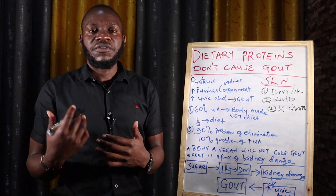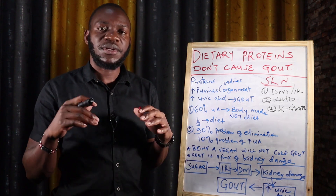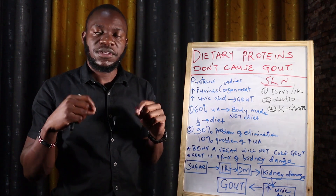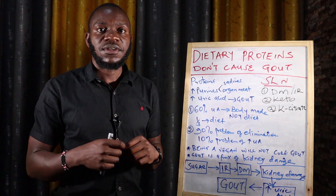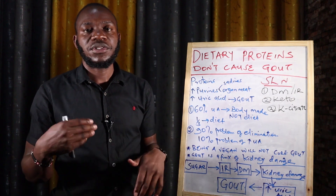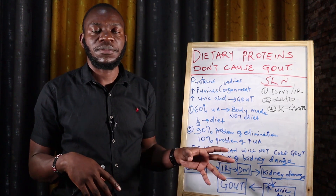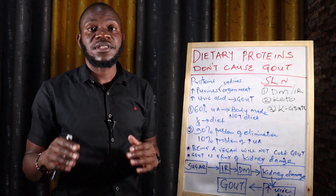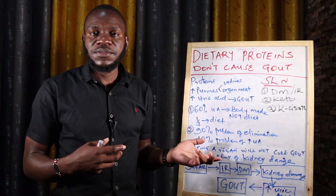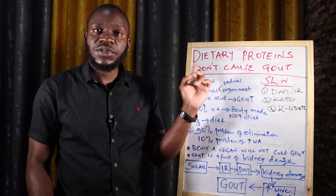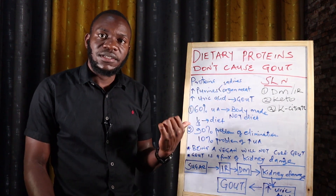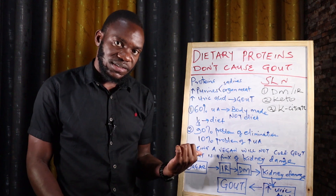When you are diagnosed with gout, the first thing doctors tell you is to quit meat and become vegan — eat high amounts of vegetables and no meat — because they believe eating meat gives you purines and therefore gout. But even after becoming vegan and taking drugs to reduce inflammation and uric acid, you still experience the same symptoms. The reason is that dietary protein does not cause gout.